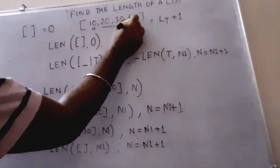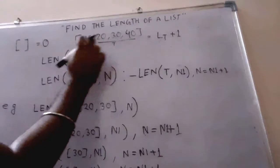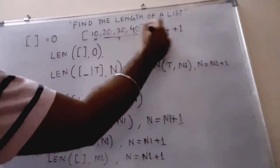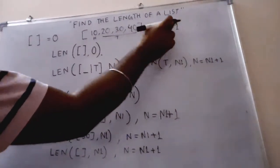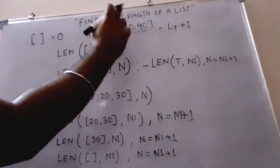Here, [20,30,40] has length 3, plus 1 equals 4. So the length will be the length of the tail plus one. We will implement this logic in Prolog to find the length of a list.